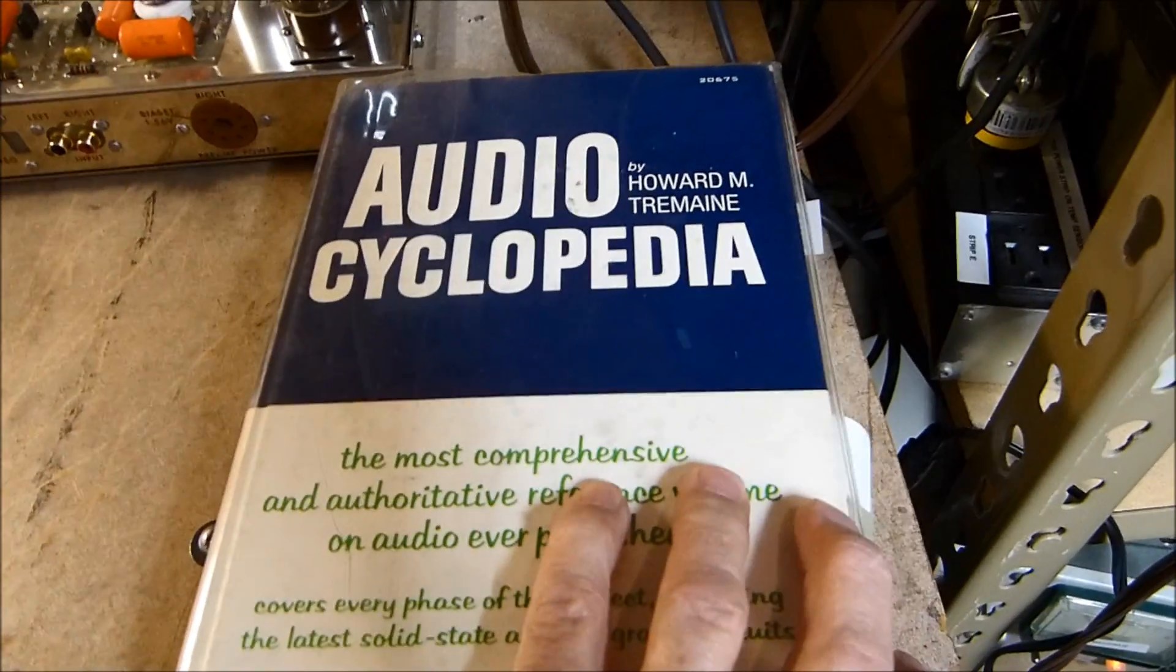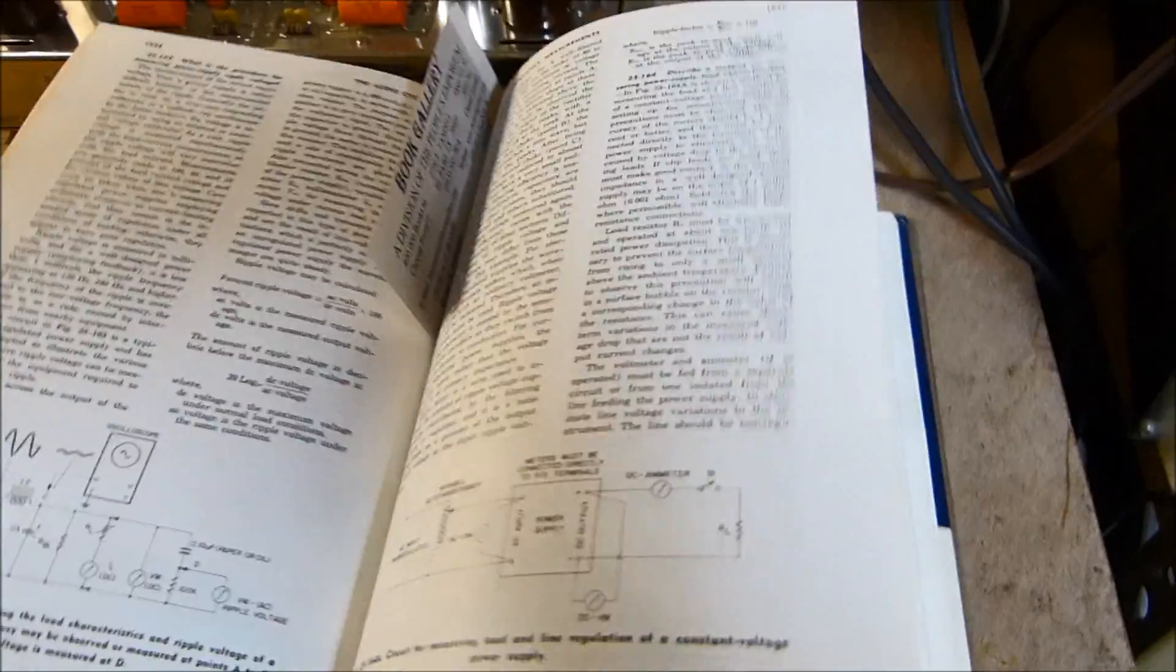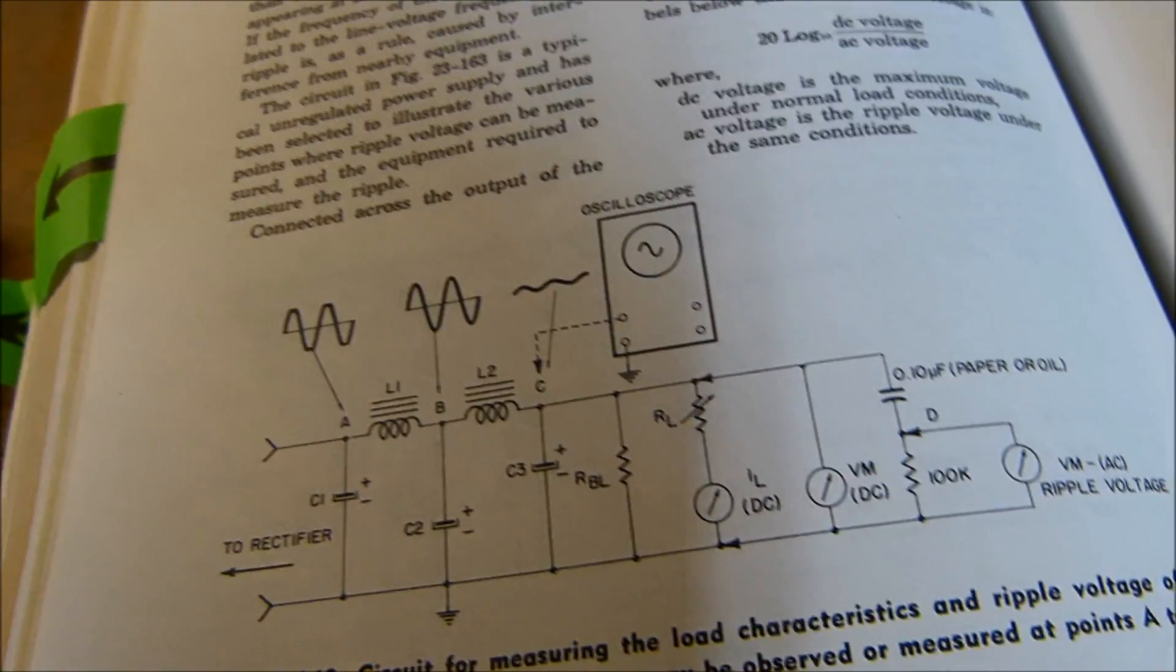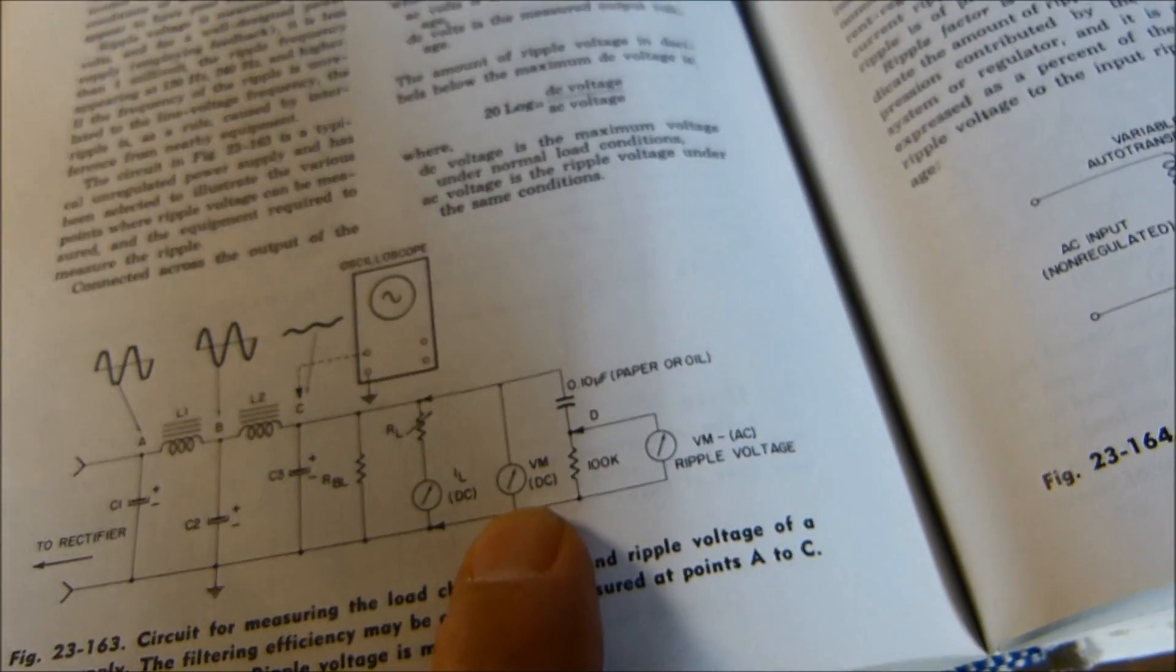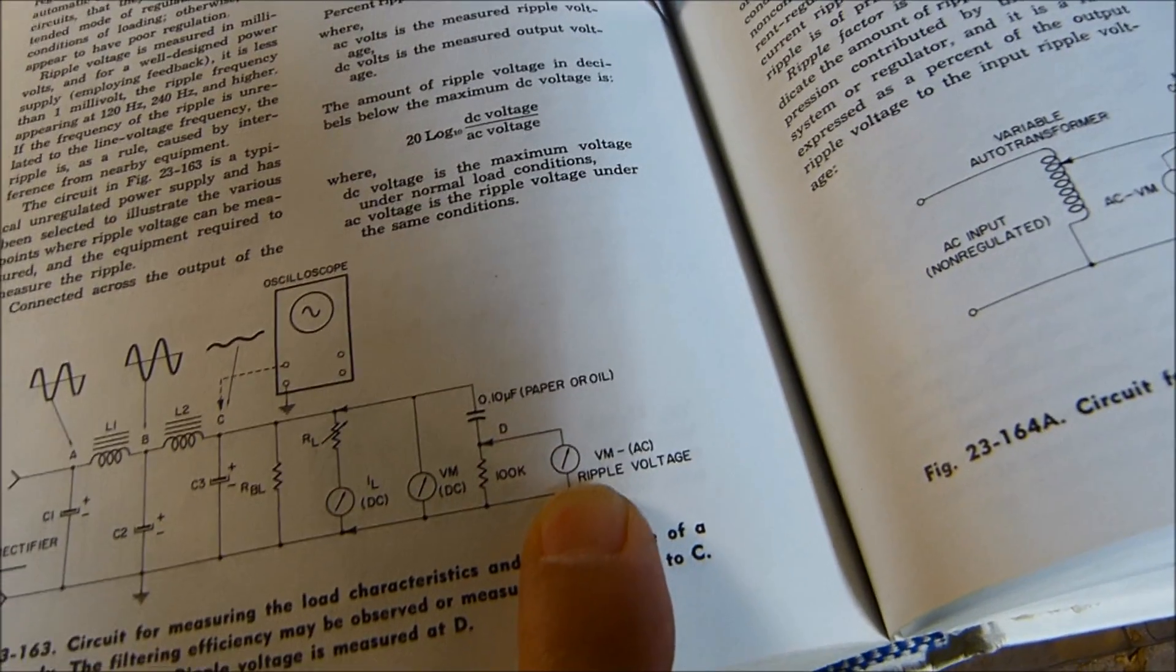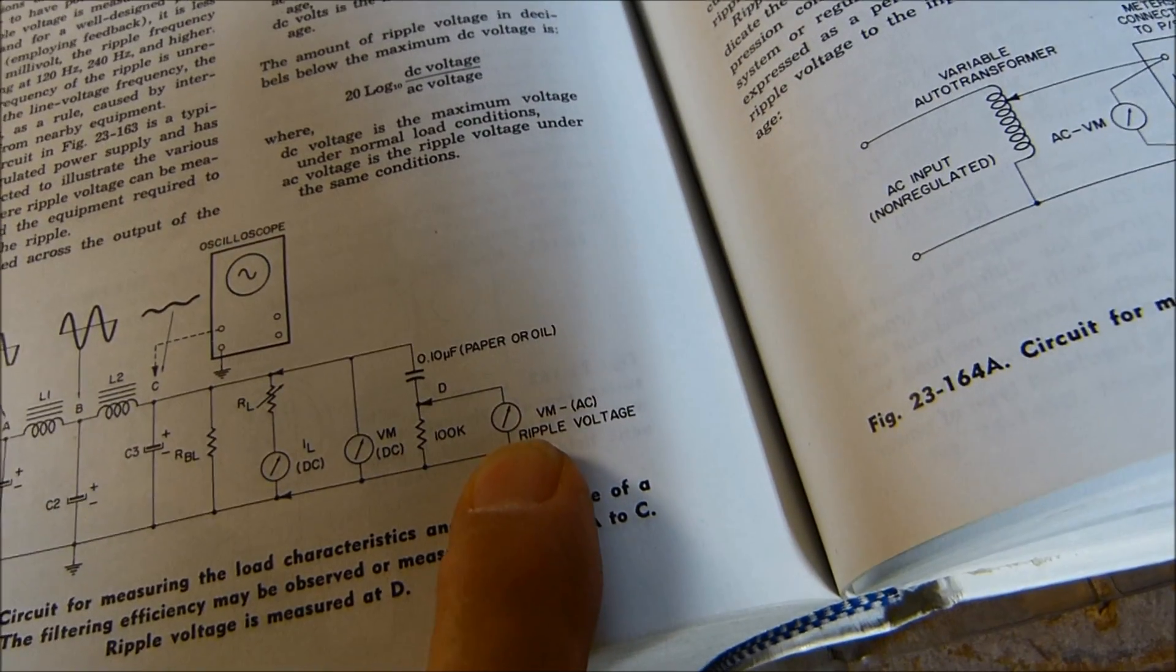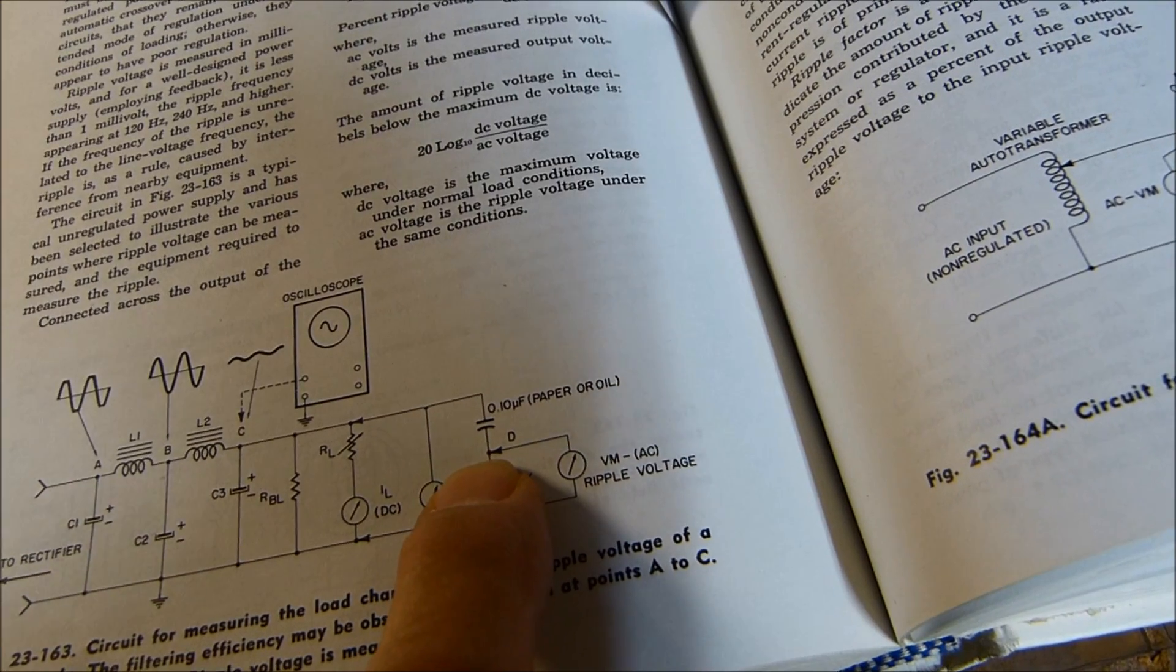I've used this book many times. Here's his method for measuring it. Here's the power supply - he's got a current meter across it which we don't need, he's got a voltmeter which we will use to measure the voltage, and then he's measuring the AC ripple using a voltmeter with a capacitor in series with it to remove the DC component. Pretty simple, huh?